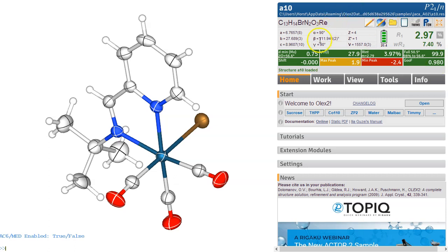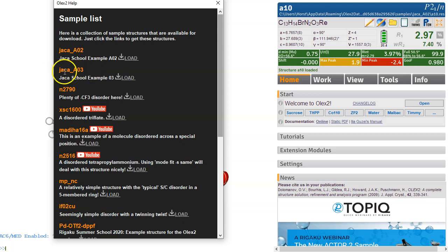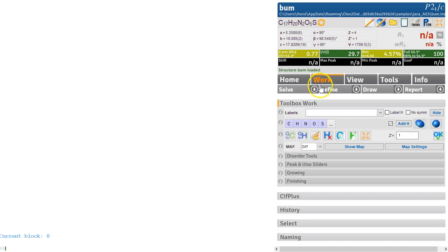We just finished with the first of the Haka samples. Let's go to the second. Start, the three dots, and it's that second one here, Haka AO3. Loading this by clicking on there. The structure again isn't solved, so the first thing we need to do is solve it.